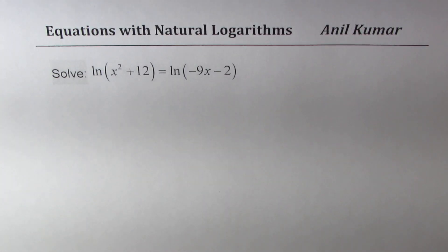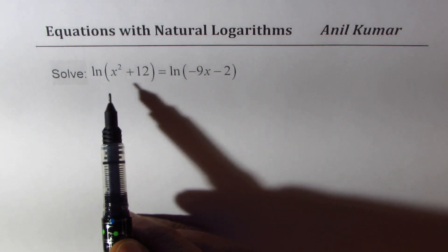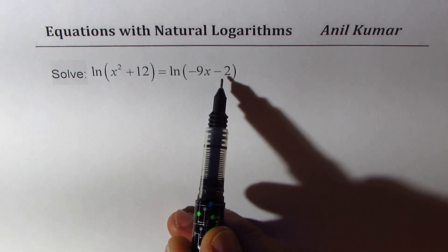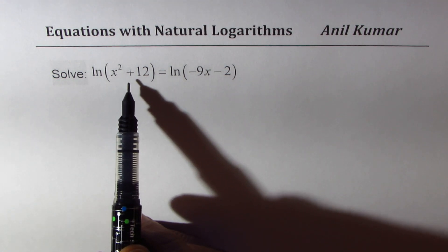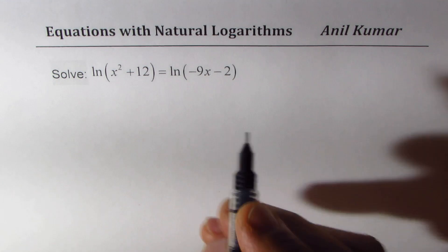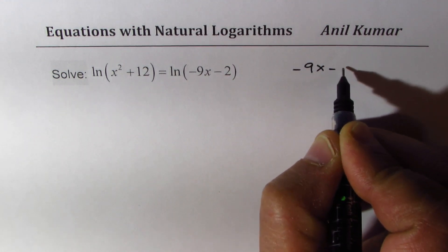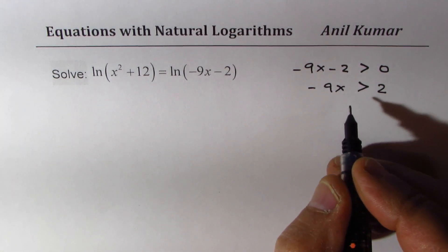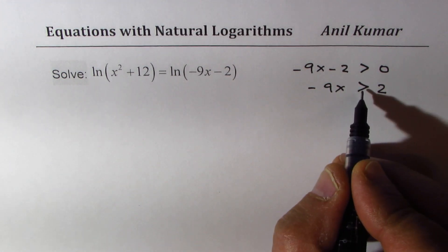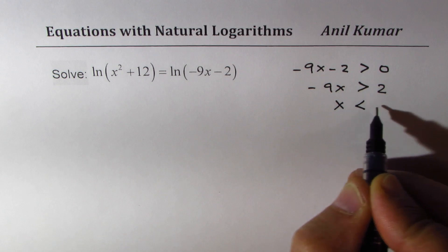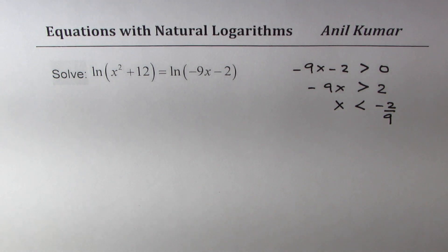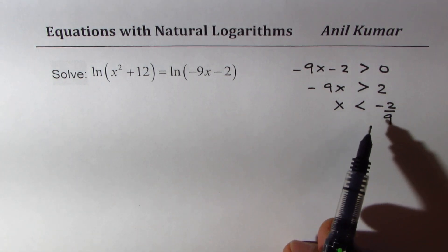Let's take the next one. It's not a very difficult topic. Here we have ln(x squared plus 12) equals to ln(minus 9x minus 2). The left side has no restrictions at all, but on the right side we need minus 9x minus 2 to be greater than 0. So minus 9x should be greater than 2. Dividing by a negative number reverses the sign, giving x less than minus 2 over 9. That is the restriction, and when we get our answer we must check it is within this domain.